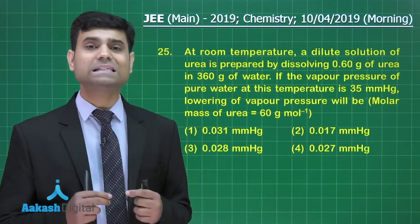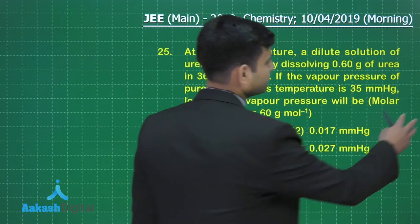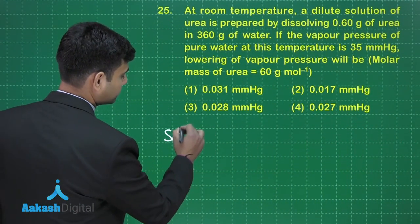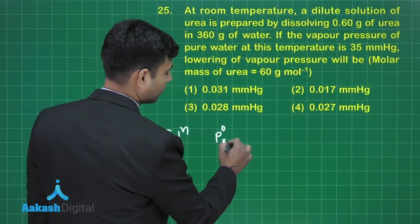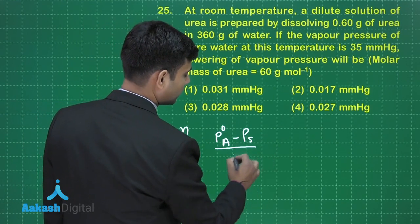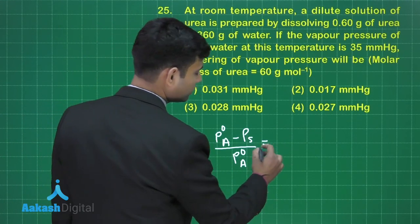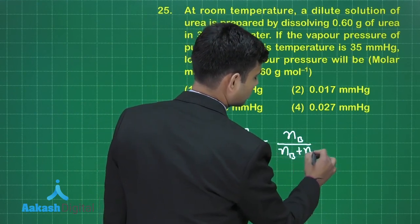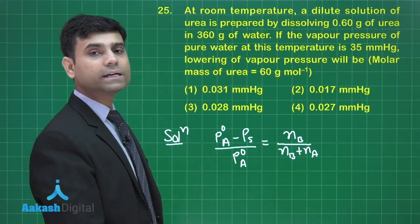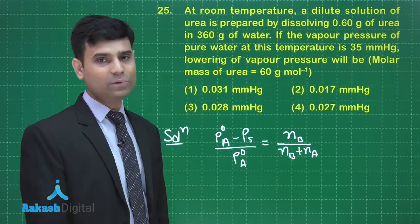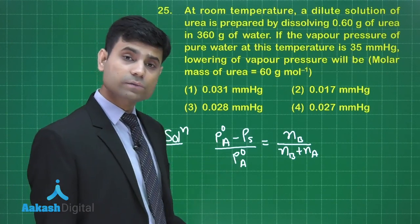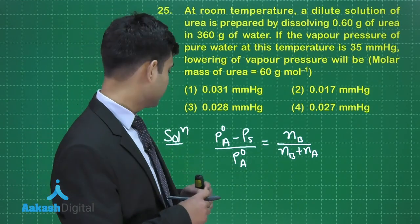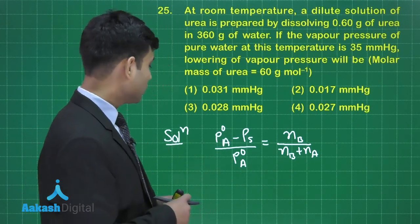As we know, relative lowering of vapor pressure equals the mole fraction of solute. So we can write: (P°a − Ps) / P°a = Nb / (Nb + Na), where a is the solvent, B is the solute. Nb represents moles of solute, Na represents moles of solvent. P°a is the vapor pressure of pure solvent, Ps is the vapor pressure of the solution.